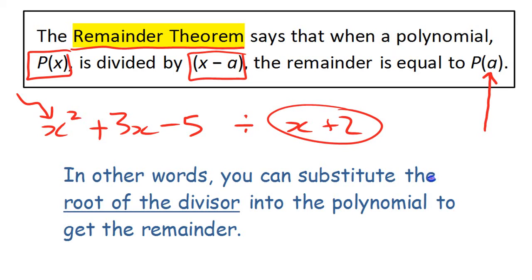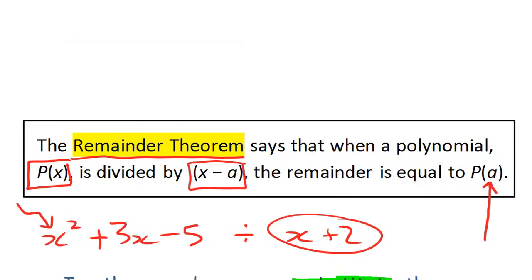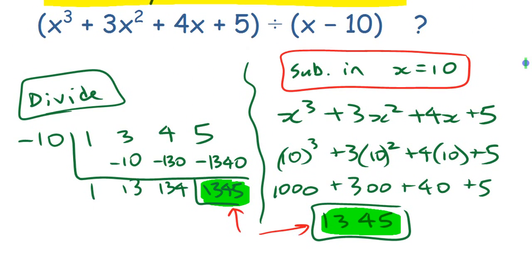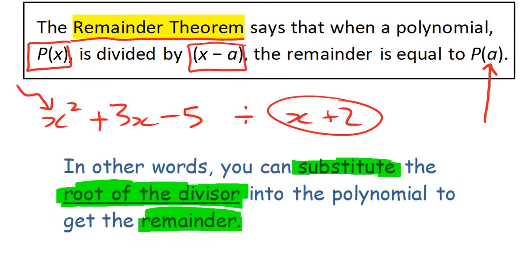In everyday language: substitute in the root of the divisor and you get the remainder. You might wonder why you care about the remainder instead of the quotient. Often what we care more about is the quotient when you divide. What we're going to get into in the future is looking at the remainder and using that to make some decisions about whether things are factors or not — but that's getting ahead of ourselves a little bit.